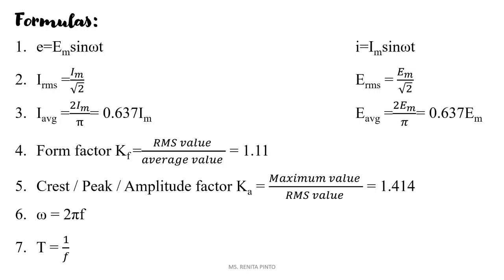In the previous video we found the equation for alternating EMF: e = Em sin(ωt). Similarly, the instantaneous value of alternating current is i = Im sin(ωt). The RMS value of current is Irms = Im / √2, and the RMS value of voltage is Em / √2. The average value of current is 0.637·Im and the average value of voltage is 0.637·Em.